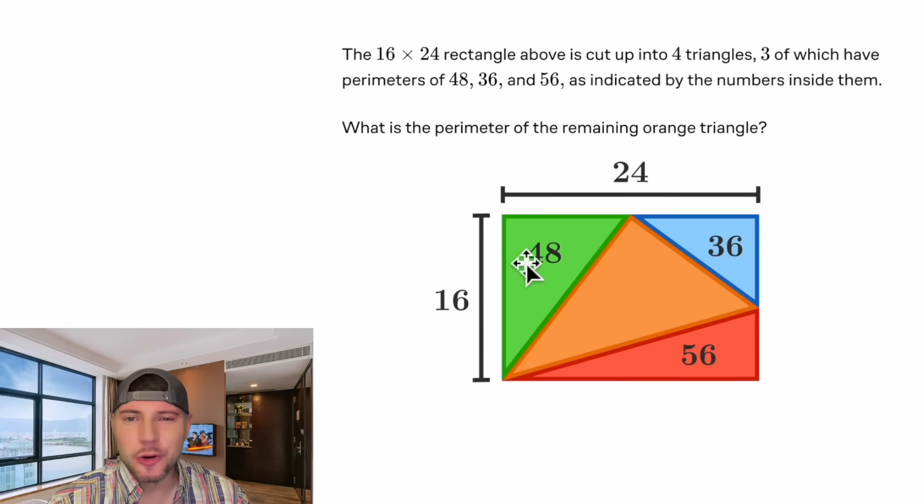Hey guys, this looks like a fun one. We're given a rectangle with dimensions 16 by 24, and the rectangle is made up of triangles that have a perimeter of 48, a perimeter of 36, and a perimeter of 56. The question is asking, what is the perimeter of the orange triangle?